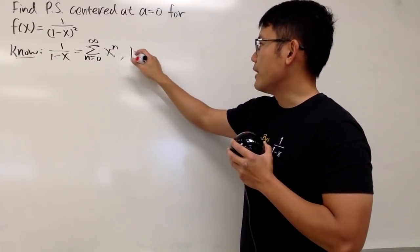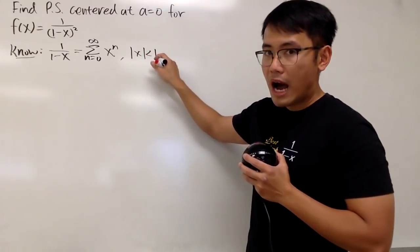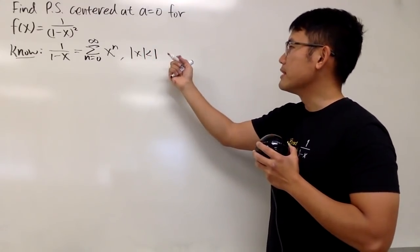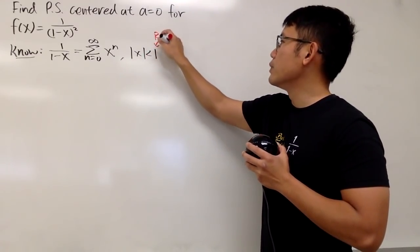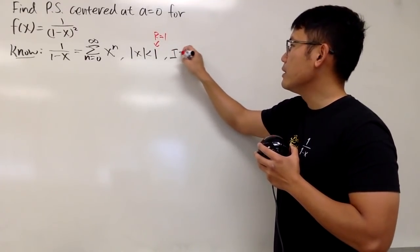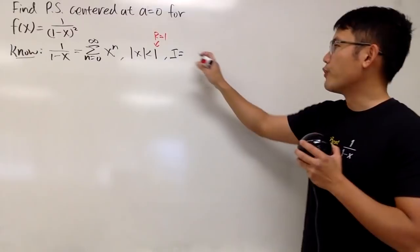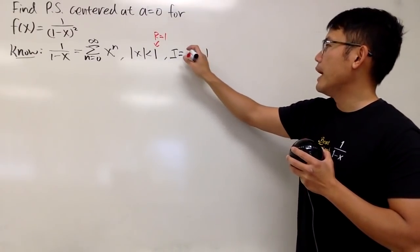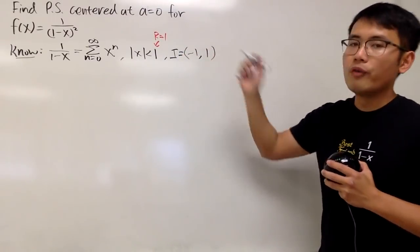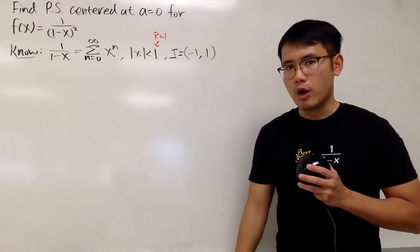Based on this, we know absolute value of x is less than 1. With that being said, we know r is 1, and the interval for the best friend goes from -1 to 1, and we do not include both endpoints. This is what we know.